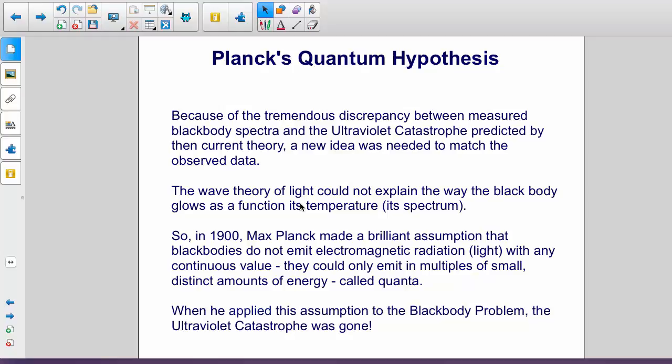The wave theory of light could not explain the way the black body glows as a function of its temperature. So in 1900, Max Planck made a brilliant assumption that black bodies do not emit electromagnetic radiation with any continuous values. They could only do so in multiples of small distinct amounts of energy called quanta.